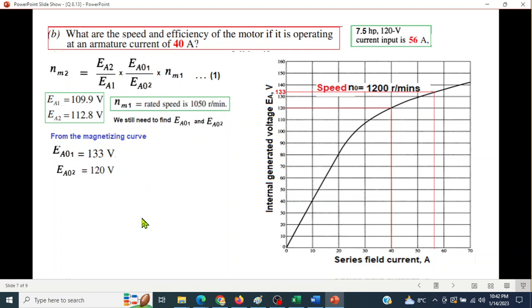So we have now found all the things. So we find the new speed by plugging in these values, and the new speed is 1195 revolutions per minute.